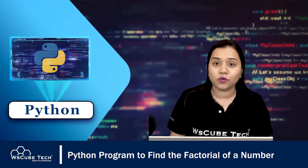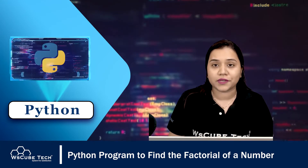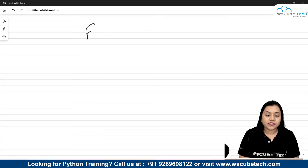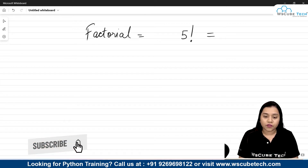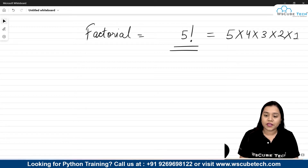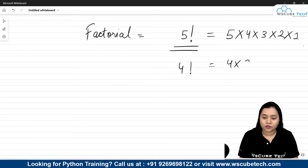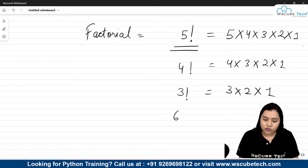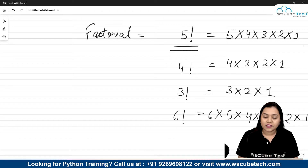Let's start with solution number one using the for loop, and also understand what a factorial is. The factorial of a number — for example, factorial of 5 — is indicated by the exclamation symbol, and factorial of 5 is 5 multiplied by 4 multiplied by 3 multiplied by 2 multiplied by 1. That means it gives us the multiplication of natural numbers down to 1.